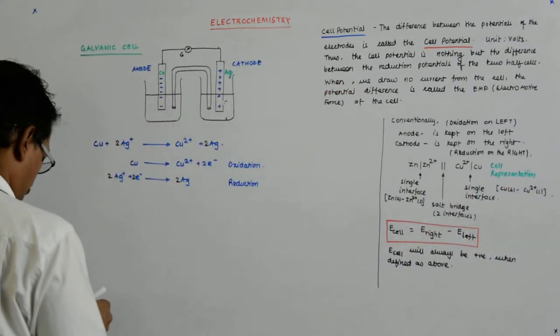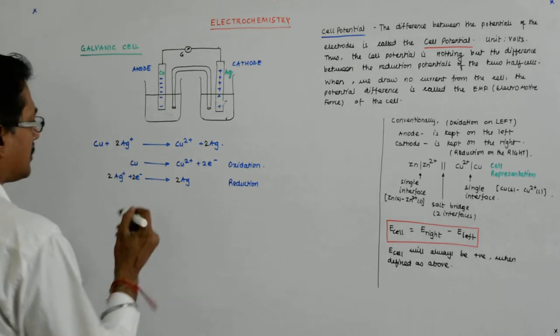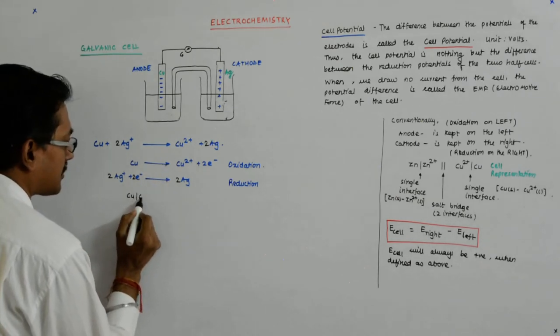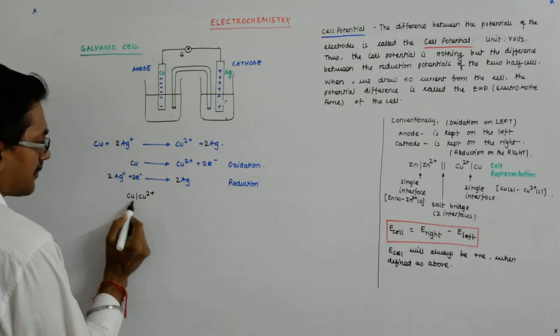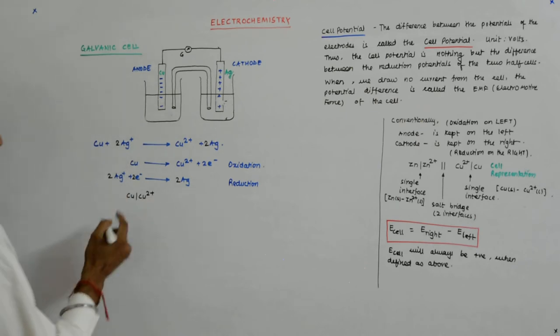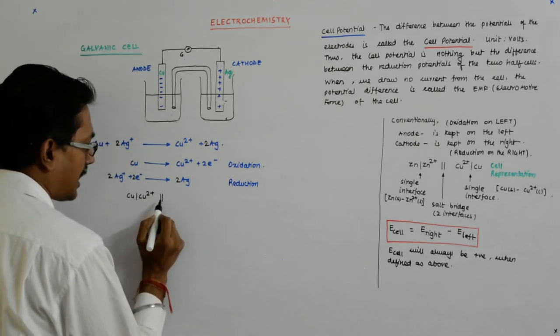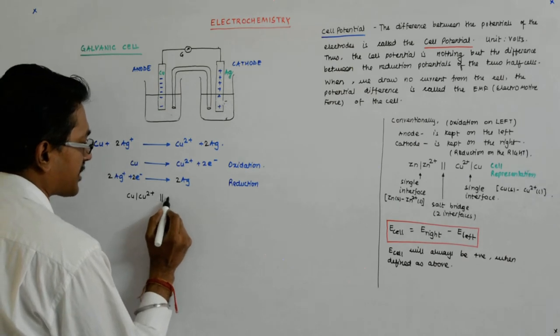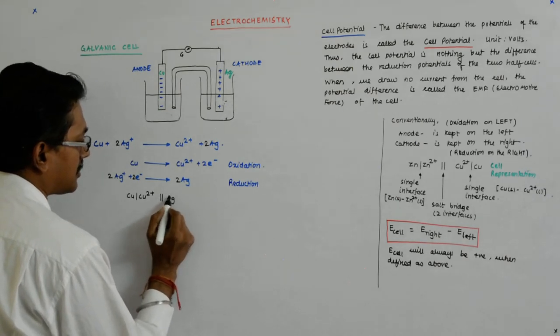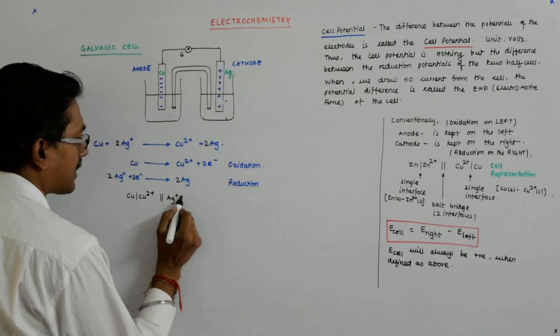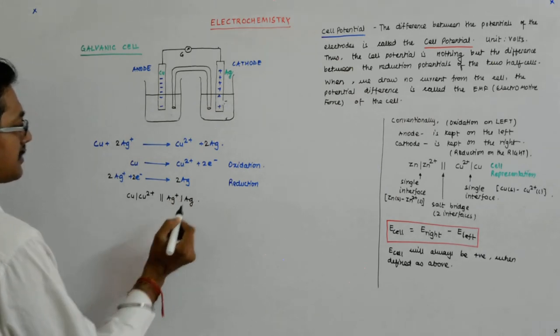How do I represent it? Whatever oxidation is taking place, with one single slash which represents one interface, I write to the left. Double slash, which represents the salt bridge, I write in the middle, and followed by the reduction.